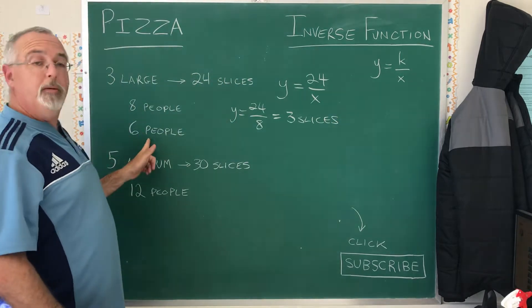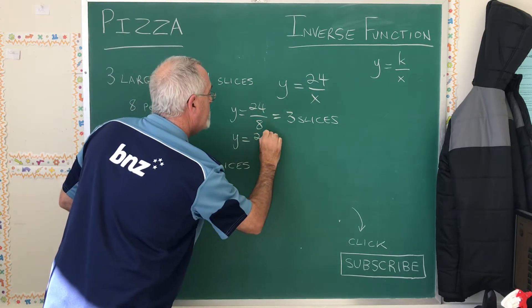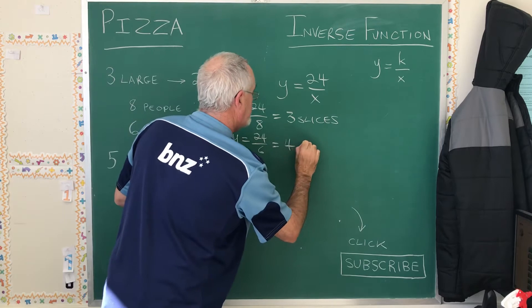But if six people were sharing the same amount of pizza, y would be equal to 24 divided by 6, which is four slices each.